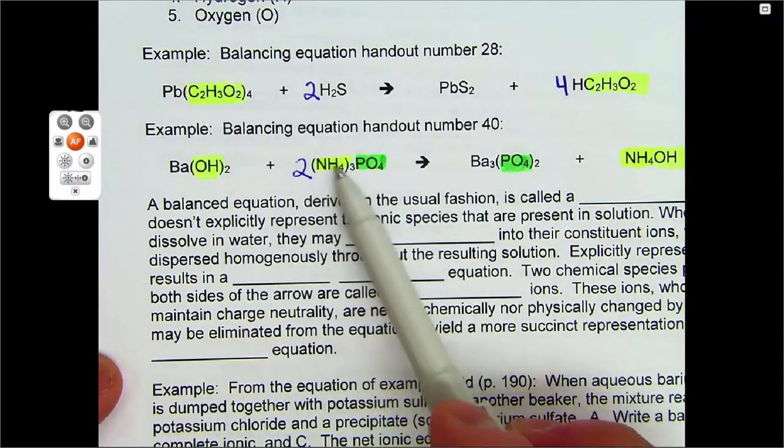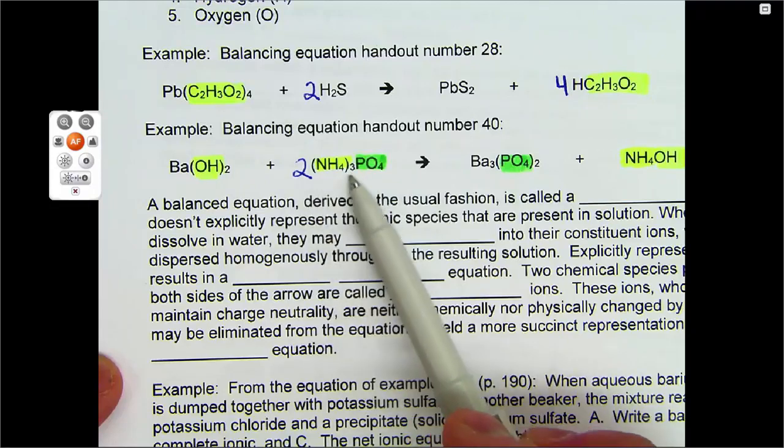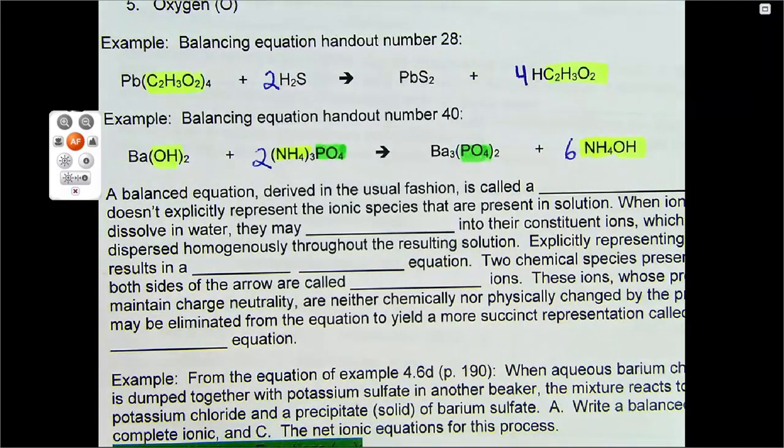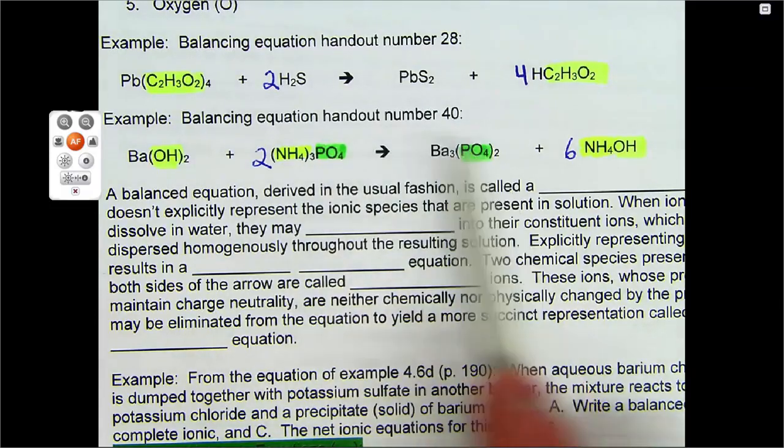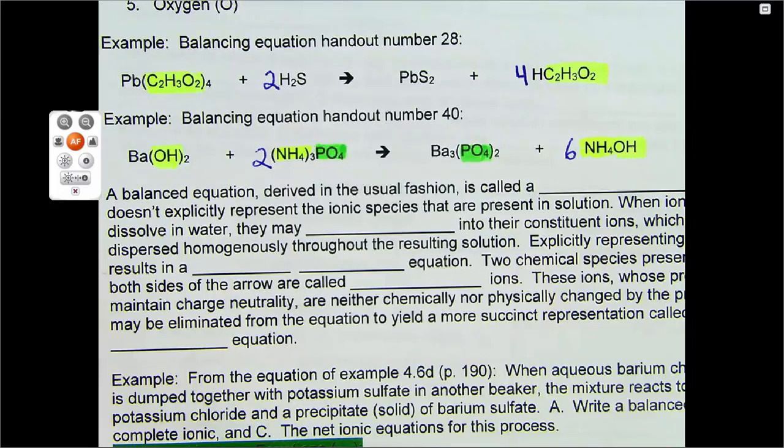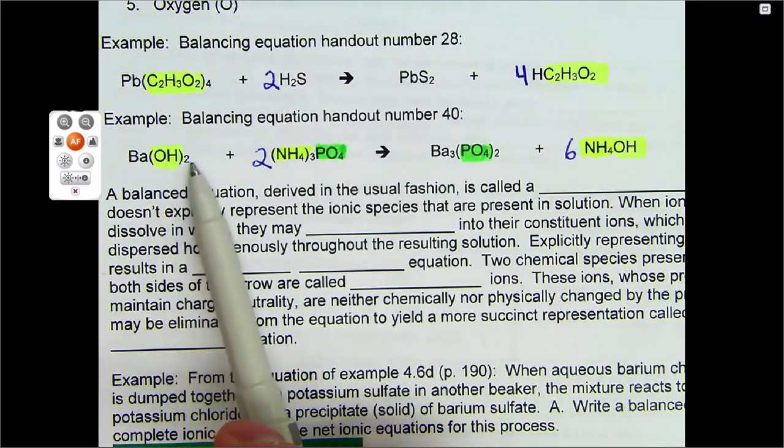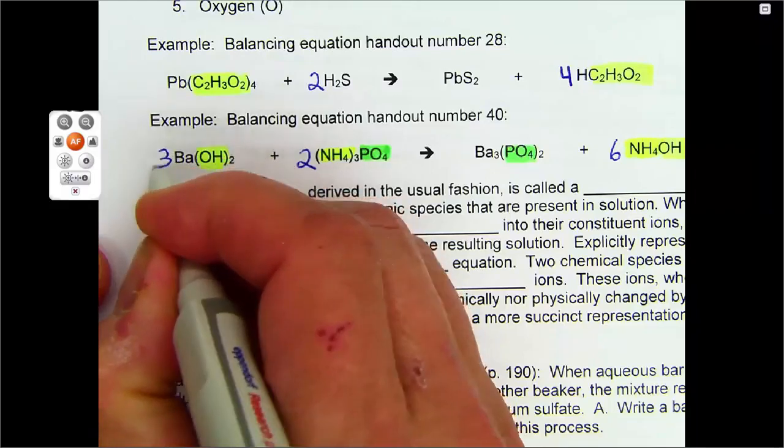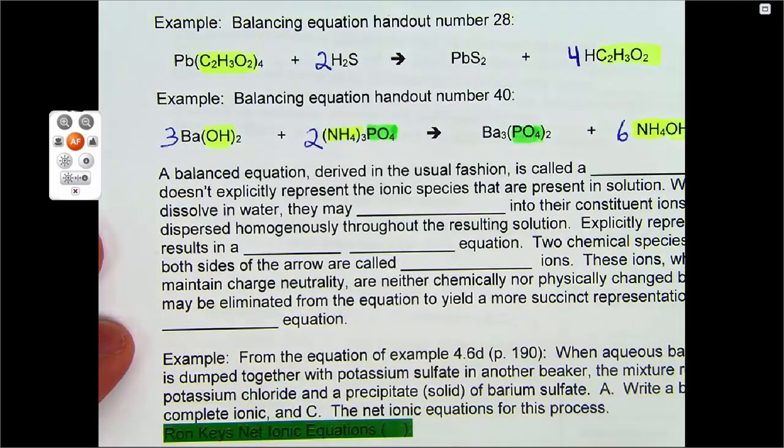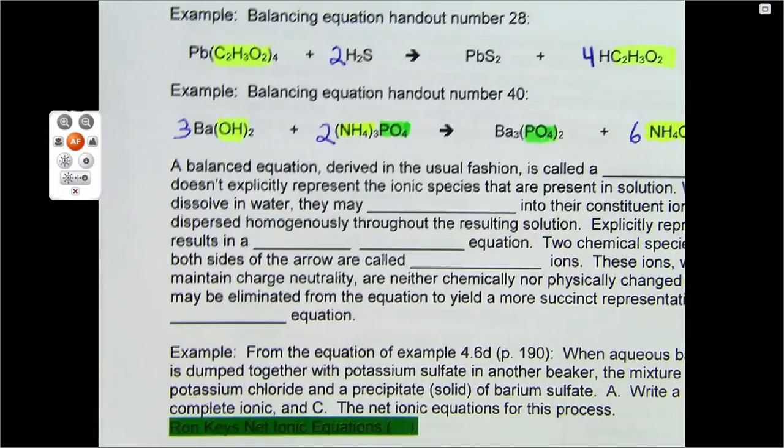Then, since I just changed the number of ammonium here, this NH4, to two times three, which is six. Let's put a six right here. That gives me six NH4s. Okay, so I've got my PO4s. I got my NH4s. Now, let's look at OH. I have six OHs here. And I'll have two OHs here. So, I need to put a three here. And notice that takes care of the barium as well. So, we have this one balanced.